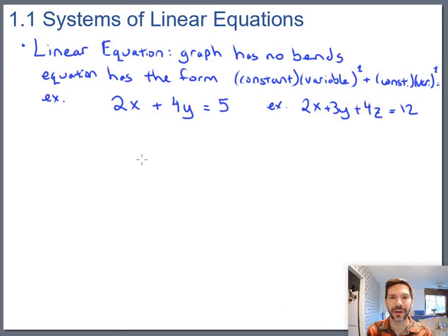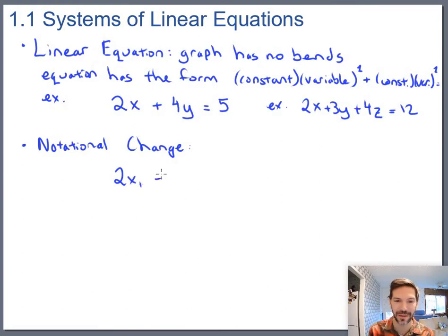It turns out pretty quickly that we have a hard time thinking up enough variables, so a notational change: in linear algebra instead of going x, y, z, we're going to go x1, x2, x3, and then we can go as far as we want - we have an x4 and x5 and x100 if we need to. So this same equation up here would look more like 2x1 plus 4x2 equals 5, or the three-dimensional version would become 2x1 plus 3x2 plus 4x3 equals 12.